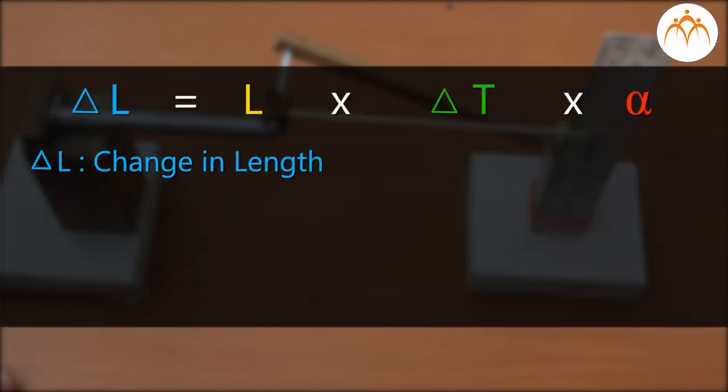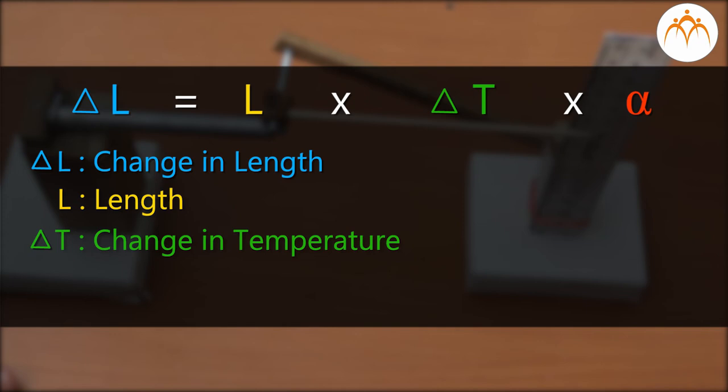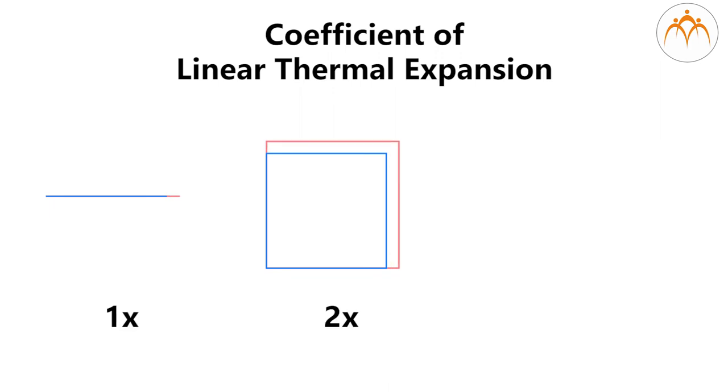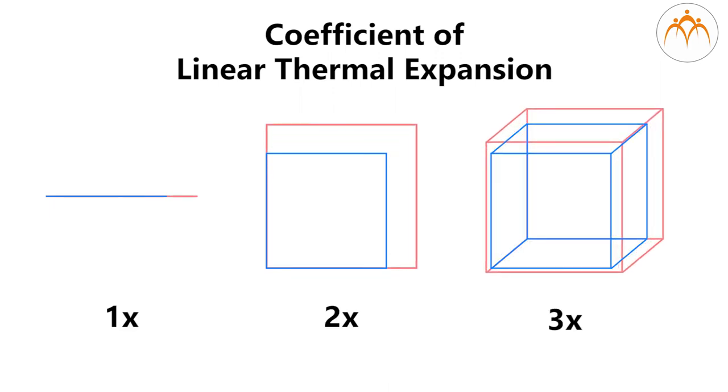Change in length delta L can be calculated by multiplying the length, change in temperature and coefficient of linear expansion alpha. Area will expand twice as much as length and volume will expand thrice as much as length.